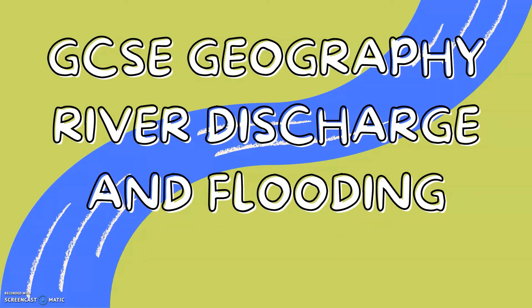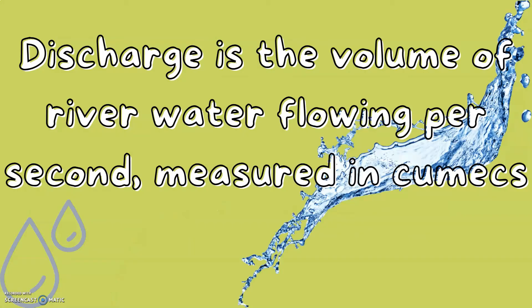GCSE geography: river discharge and flooding. Discharge is the volume of river water flowing per second, measured in cumecs.